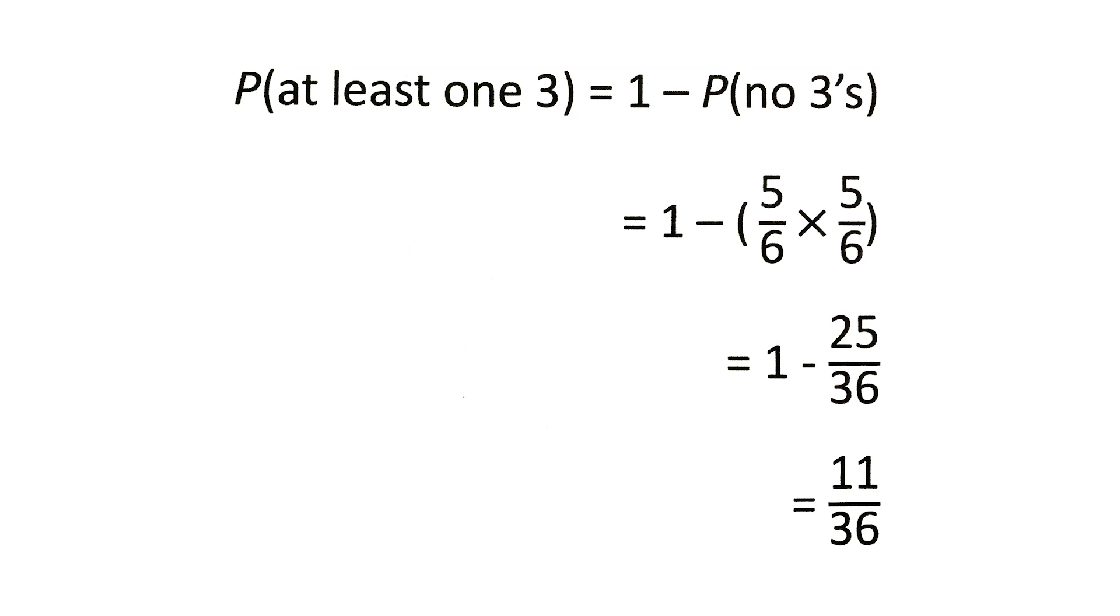Because when you roll the first die you'd have five numbers that you can get because there's no threes, and then the same happens for the second die. And then you simplify this so it's equal to one minus